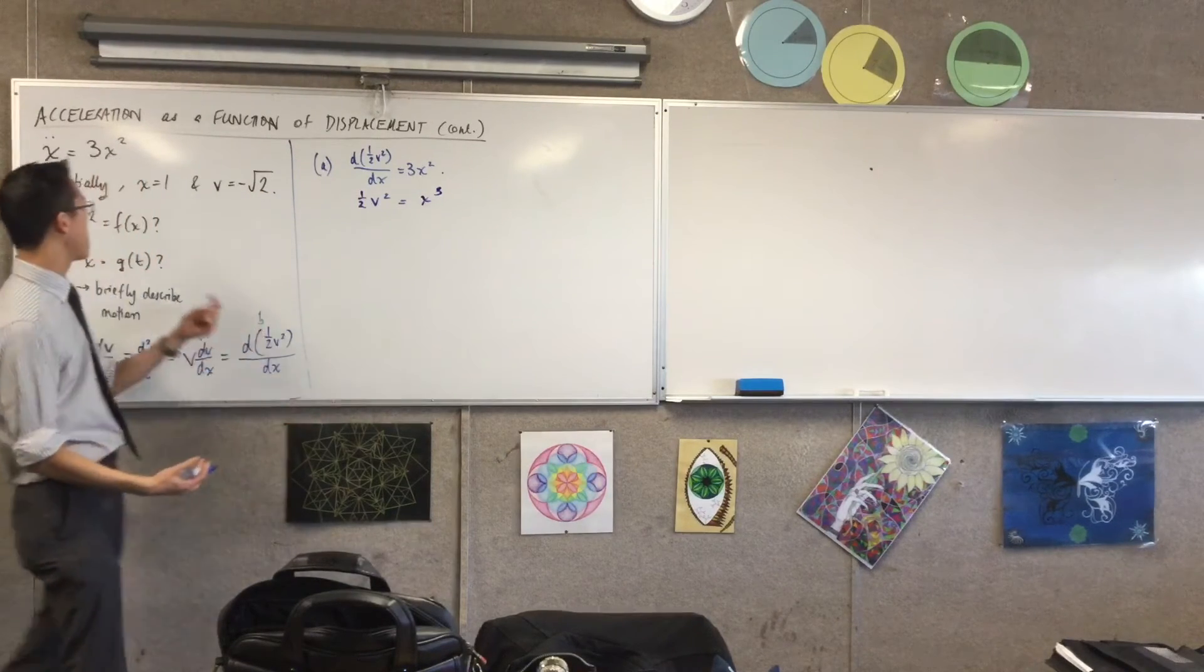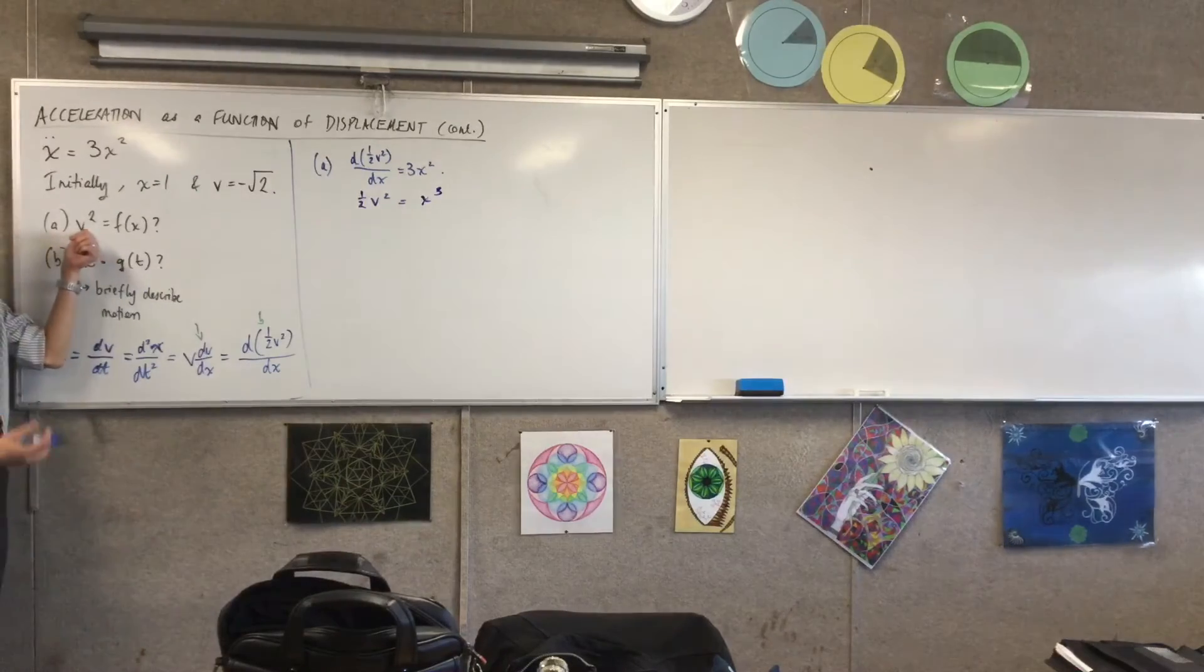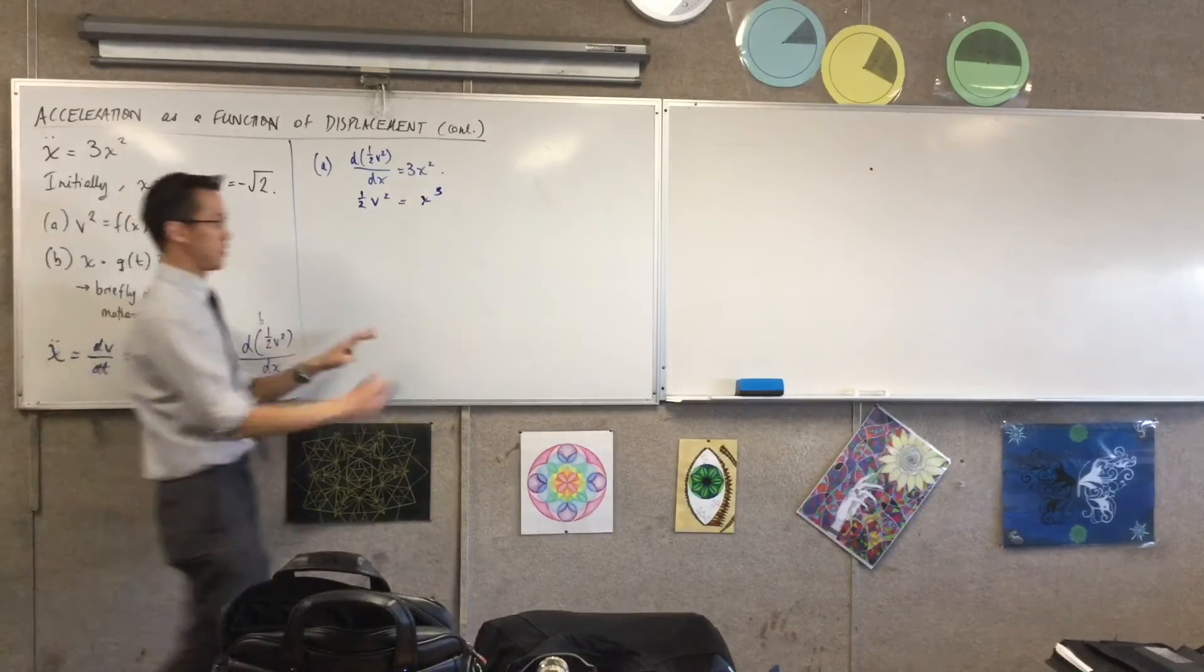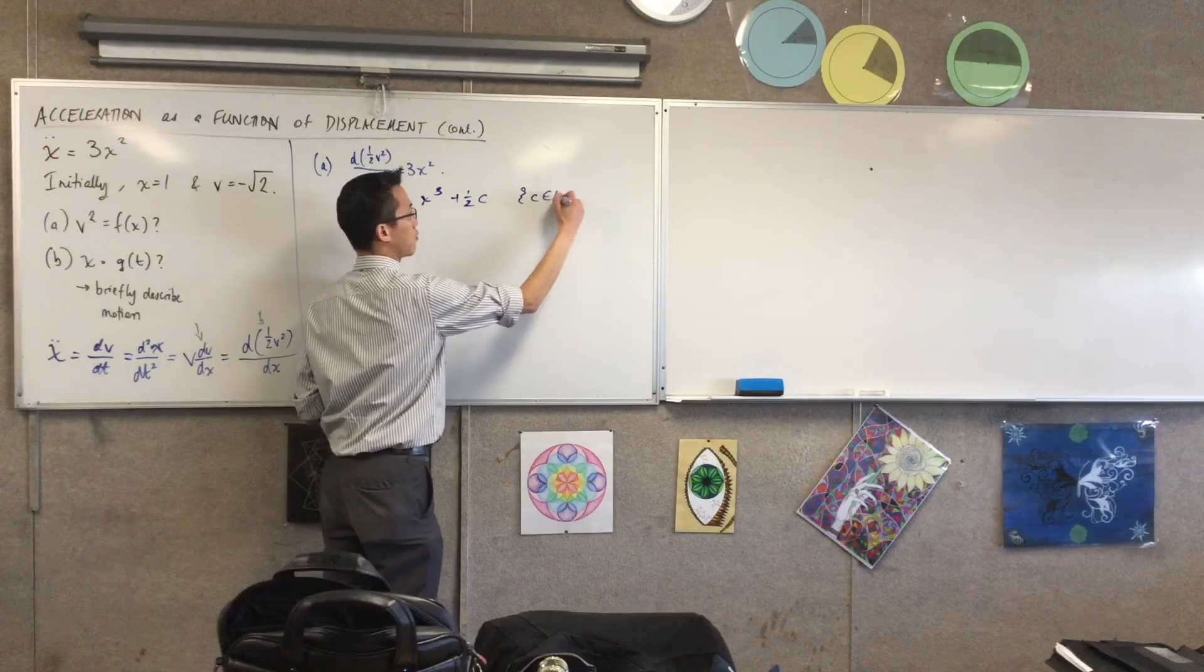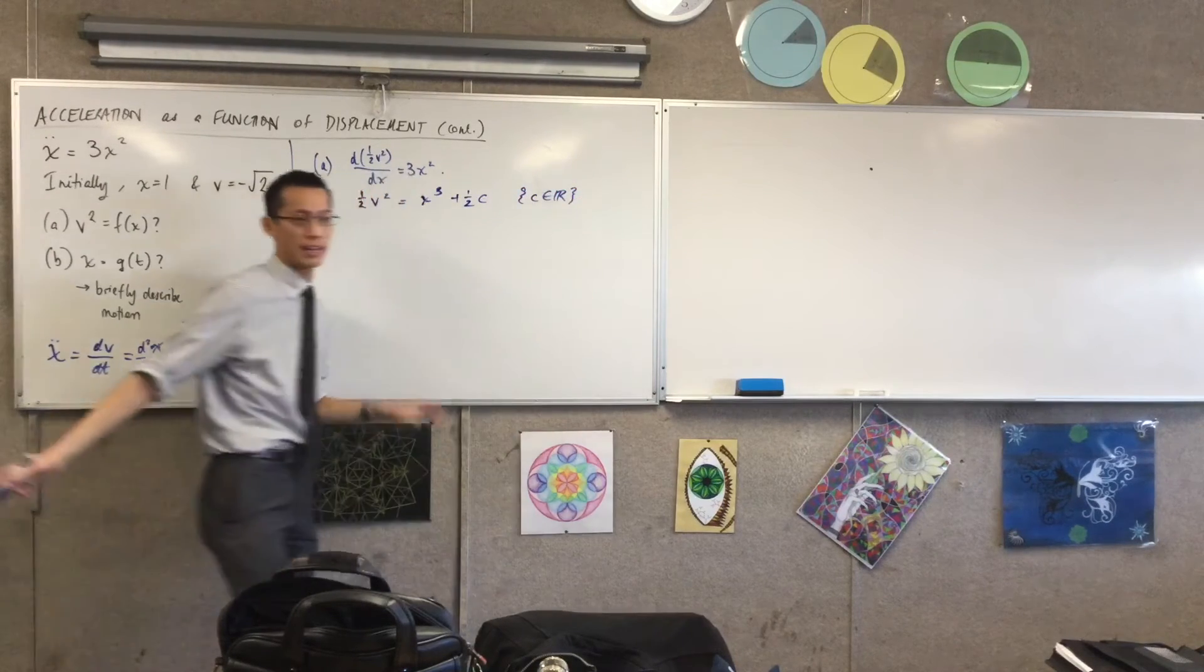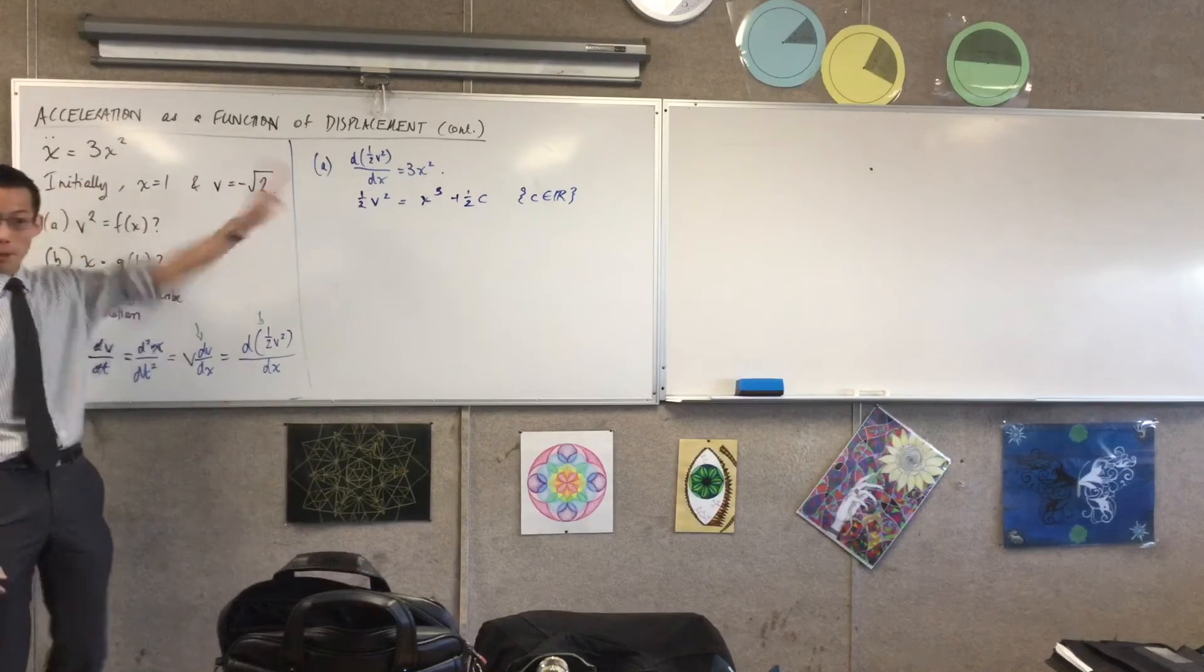However, because I'm about to double this thing and get to v squared rather than half v squared, I'm just going to call this a half c. And c is a real number, some constant hanging out there. Multiply through.